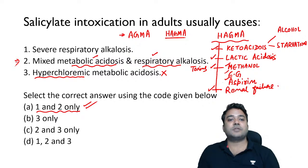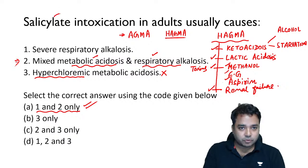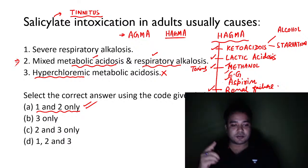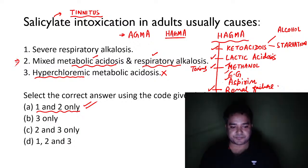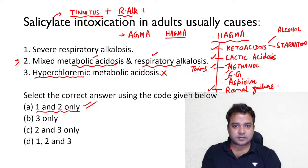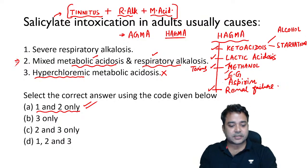The best finding for diagnosing salicylate poisoning in casualty: these patients usually present with tinnitus — ringing in the ears — and decreased hearing. A combination of initial respiratory alkalosis followed by metabolic acidosis forms the diagnostic modalities for aspirin poisoning. These three important findings — tinnitus, respiratory alkalosis, and metabolic acidosis — are key.